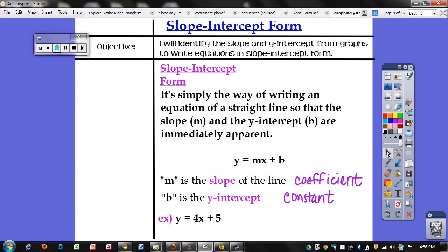First, I'm going to go over what slope-intercept form is. It's simply the way of writing an equation of a straight line so that the slope and the y-intercept are immediately apparent. This is the form right here, y equals mx plus b. You've seen this before, but you haven't seen this formula. m is going to represent the slope of the line, so this is your slope right here.